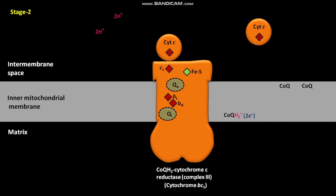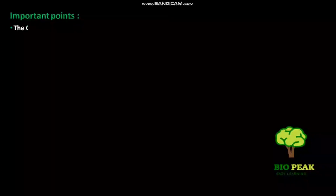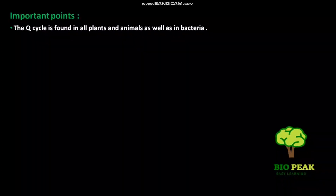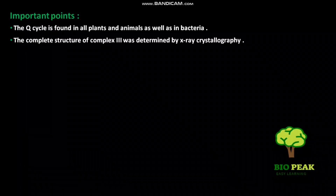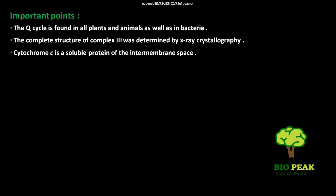The binding of a new COQ molecule to the freed QI site will begin a new Q cycle. Cytochrome C shuttles one electron from complex III to complex IV. Important points: the Q cycle is found in all plants and animals as well as in bacteria. The complete structure of complex III was determined by X-ray crystallography. Cytochrome C is a soluble protein of the intermembrane space.